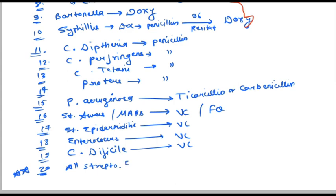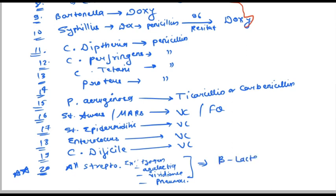The 20th point: all streptococcal bacteria — like Streptococcus pyogenes, agalactiae, viridans, and pneumoniae — we give beta-lactam antibiotics. However, here is one important exception: Enterococcus is a streptococcal bacteria, but for Enterococcus we give vancomycin. You have to memorize that.